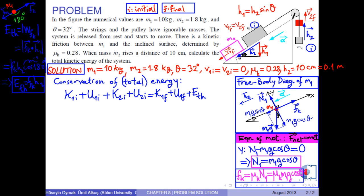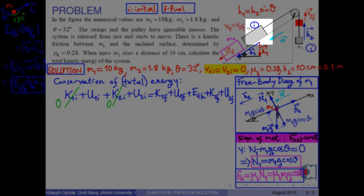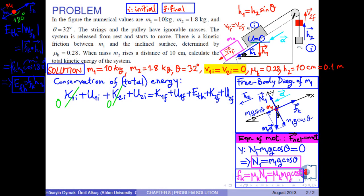Finally, we add the final total energy of mass m2 to the right. Because the system is initially held to rest, the initial kinetic energies of the masses are zero. If we choose the initial position of mass m1 as a zero gravitational potential energy level, the initial potential energy of m1 becomes zero.